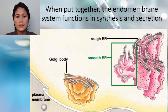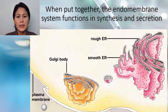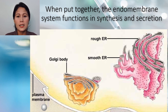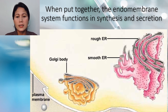The protein moves to the smooth endoplasmic reticulum where it is enclosed in a transport vesicle. The vesicle detaches and travels to the Golgi complex and empties its contents. Upon appropriate stimulation, the vesicle travels to the plasma membrane and fuses with it, secreting the protein to the cell's exterior.